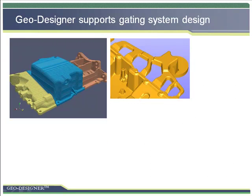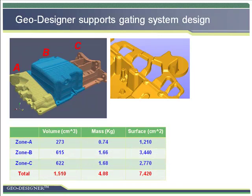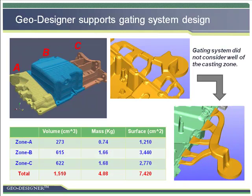For this case, another problem found was that the filling result was not balanced. GeoDesigner can also provide casting zone analysis for casting parts to assist the gating system design. For example, this part could be divided into at least 3 casting zones, and the detail information of the volume and mass of each zone could be obtained from GeoDesigner. Such information is useful for gating system design to balance the metal flow and avoid air entrapment. A comparison of two gating systems is shown — the upper one did not consider the casting zone, but the lower one considered it well.